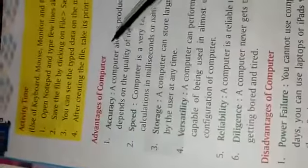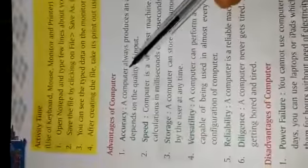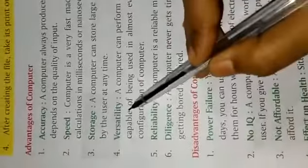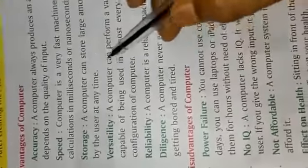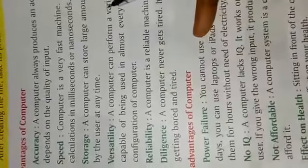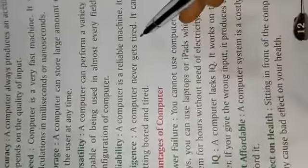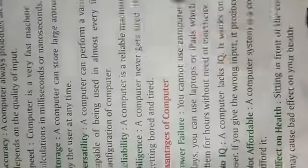Next is advantages of computer. Accuracy — work bahut accurate karta hai, mistake nahi karta. Speed — fastly work karta hai. Storage capacity — bahut zyada hoti hai data store karne ki. Versatility — ek samay mein bahut saare work kar leta hai. Reliable — easily work kar paata hai, kuch bhi confusion nahi hota. Diligence — thakta nahi hai aur continuously work kar paata hai, kyunki ek machine hai.